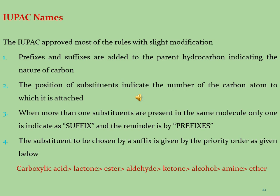Rule 1: Prefixes and suffixes are added to the parent hydrocarbons indicating the nature of the carbon atoms. Rule 2: The position of substituents indicates the number of the carbon atom to which it is attached. Rule 3: When more than one substituent is present in the same molecule, only one is indicated as a suffix and the remainder as prefixes. Rule 4: The substituent chosen as suffix is given by the priority order as listed: carboxylic acids, lactones, esters, aldehydes, ketones, alcohols, amines, and ethers — if you have more than one suffix substituent, the superior one is used as the suffix and others as prefixes.